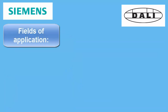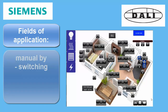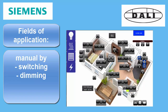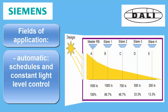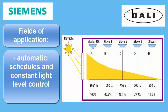The fields of application are naturally everything you can do with lighting: manual control by switching and dimming, comfort functions by scene control, and automatic functions by schedules and closed-loop control — that is, constant light level control.